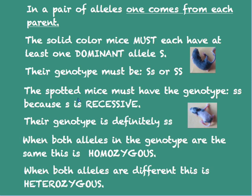The spotted mice must have the genotype little s little s, because little s is recessive. Their genotype is definitely two little s's. When both alleles in the genotype are the same, this is homozygous. When both alleles are different, this is heterozygous.